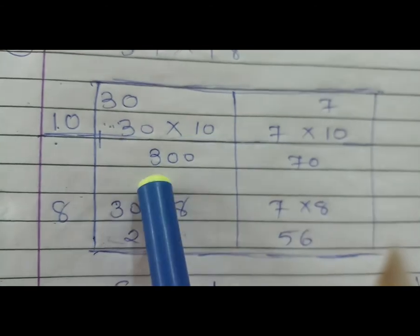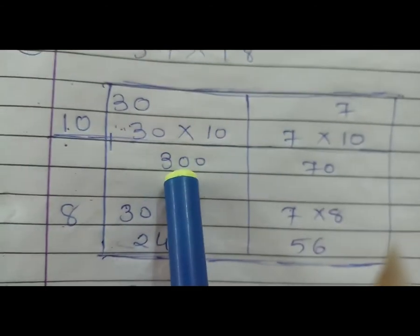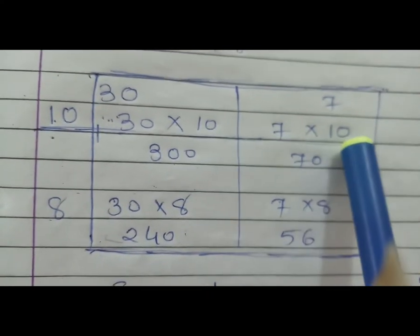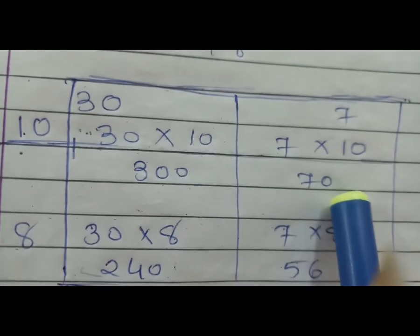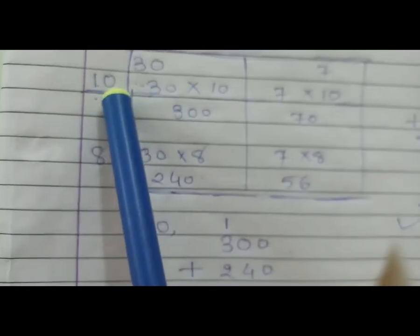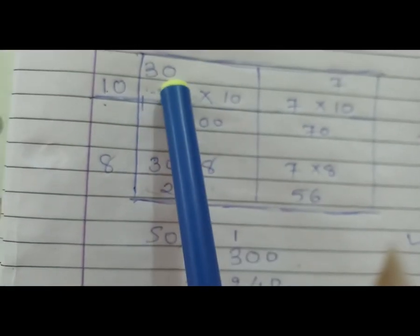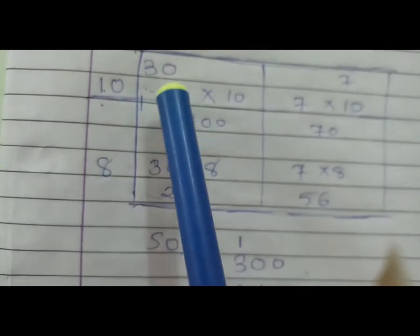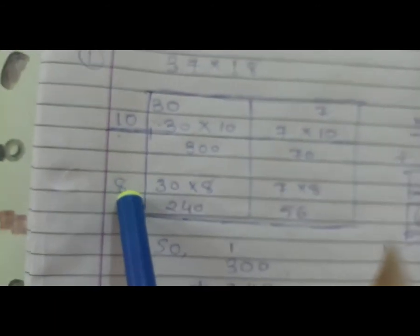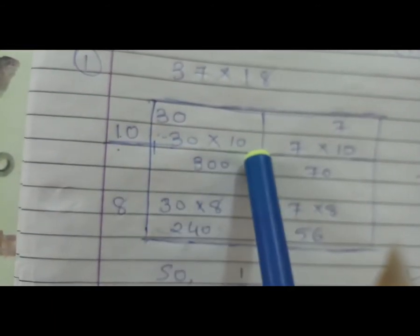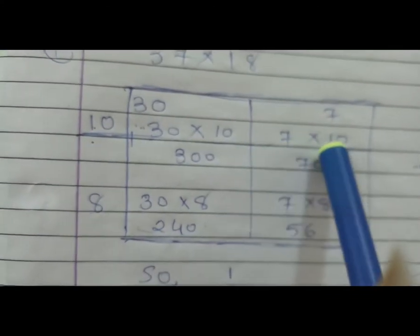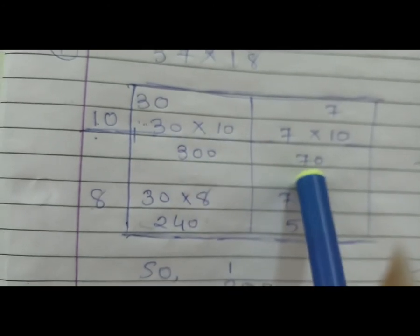अभी 7 की बारी. तो यहाँ पे 7 को लिखेंगे, multiply by 10 करेंगे. जिस तरह 30 को 10 से multiply करा, उसी तरह 7 को भी 10 से multiply करना है. अभी इसका multiply करें: 3 बजा 3, 0 and 0 — तो 300 आया. Very good. अभी इसकी बारी 7 and 10: 7 multiply 10, that means 70. अब जिस तरह से हमने 10 की बारी ली, उसी तरह से 8 की बारी लेंगे — किस किस के साथ? 30 की 8 के साथ, और 7 की भी 8 के साथ. पहले हमने 30 into 10 करा, फिर 7 into 10 करा. इन दोनों का answer लिखा — आया समझ में.